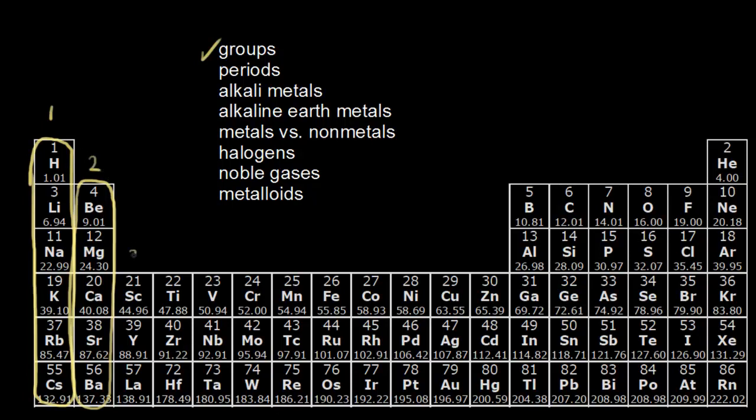I can continue labeling my groups. This would be group three, four, five, six, seven, eight, nine, 10, 11, 12, and then I go back up to here and I can see I have another vertical column. So group 13, 14, 15, 16, 17, and finally 18.